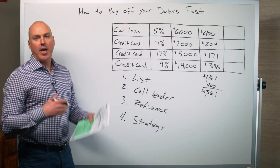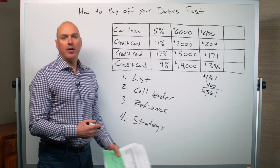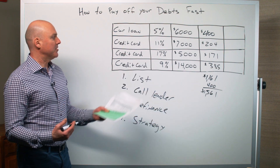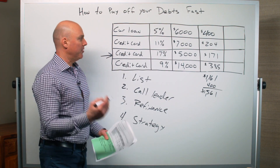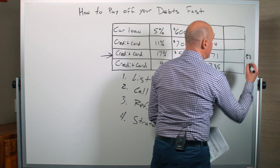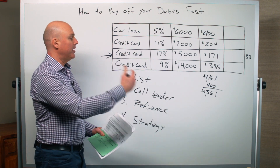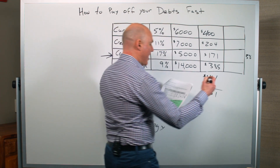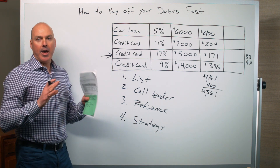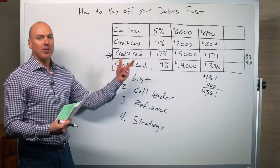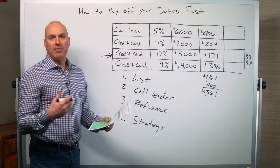Another strategy is to look at the loan with the lowest current balance — and coincidentally in this example, that's also the one with the highest interest rate. If you allocated the entire $400 to the loan with the lowest balance — the $5,000 credit card — just making the minimum $171 a month would take about 38 months to pay off, a little over three years. But if you added $400 for a total of $571 per month, that knocks it down to about 9.4 months. Then you take that extra principal and apply it to the loan with the second highest interest rate or balance — a snowballing effect.